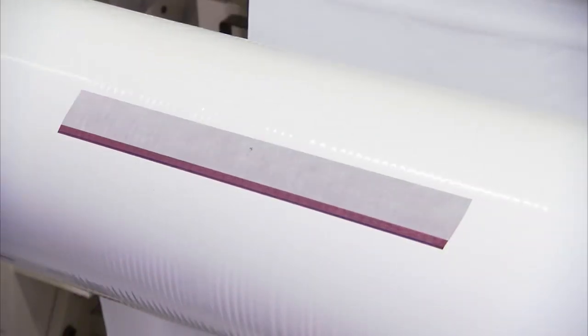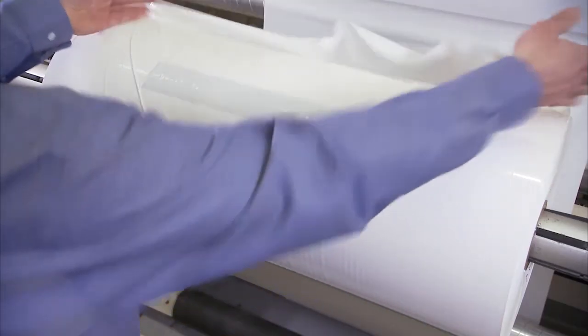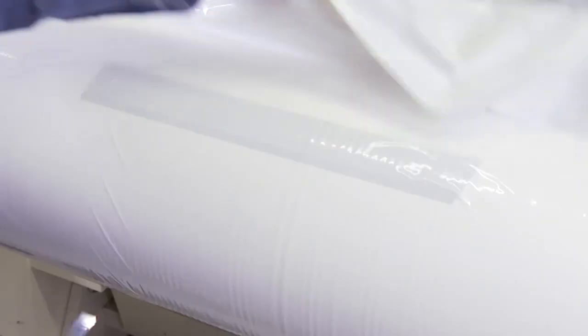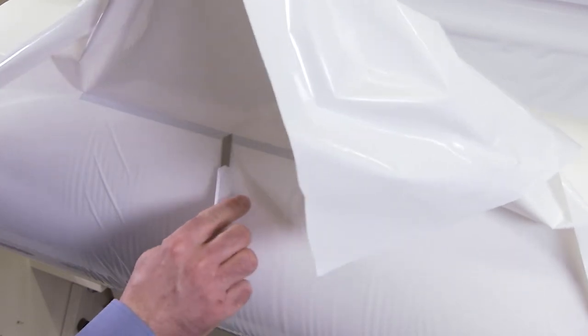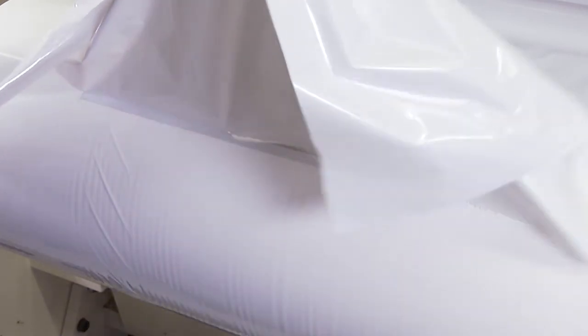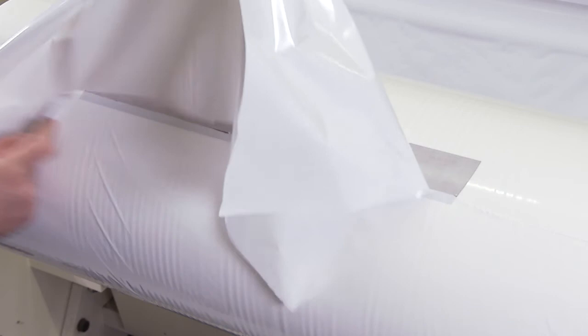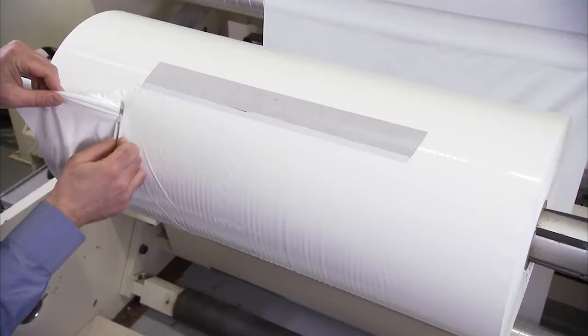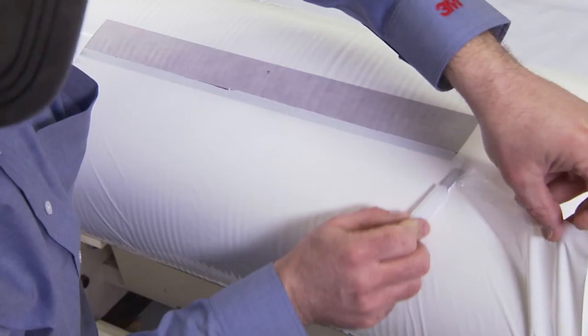Another application some printers choose is to apply the tape only to the middle portion of the roll. Start as you did before, but taper the edges of the substrate when you cut to remove the excess.